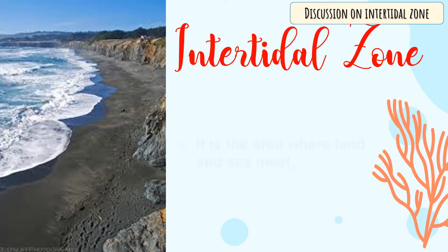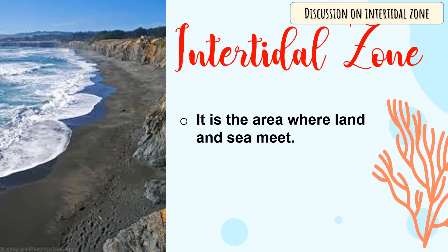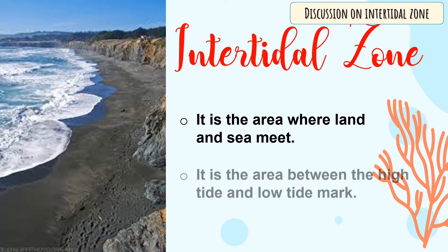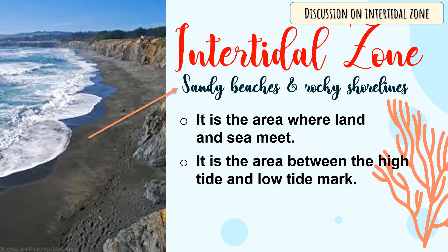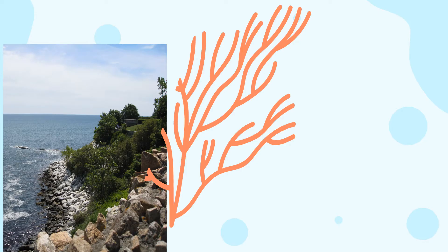Now let's talk about the intertidal zone. The intertidal zone is the area where land and sea meet. This area is covered with water at high tide and exposed to air at low tide. Its communities are found in sandy beaches along the rocky shorelines. Like estuaries, the intertidal zone is also divided into several zones.